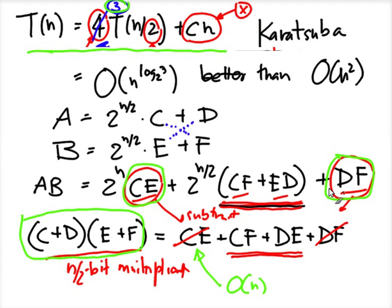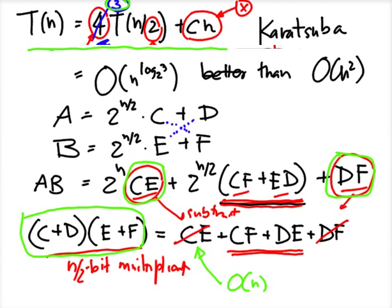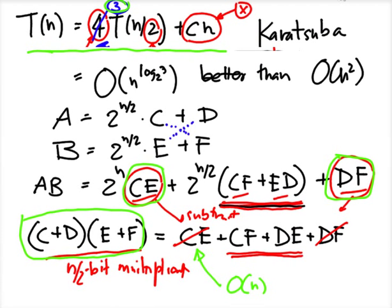So you have this recurrence with three sub-problems and you get the improved running time. Instead of four multiplications, you get it done with just three, and that improves the running time to O(n^(log₂3)).